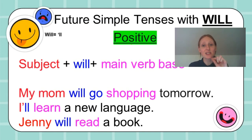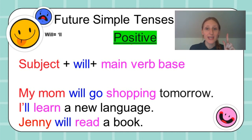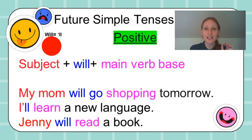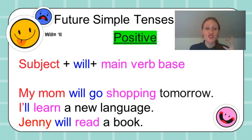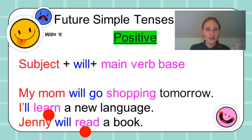Future simple tenses with will. Remember, we can take will and make it 'll' — like 'I'll', and we understand it's 'I will'. As always, we start with subject, will, and main verb base. So: my mom will go shopping tomorrow. I'll learn a new language. Jenny will read a book. These verbs are in their main base or their basic form — they're not too complex.